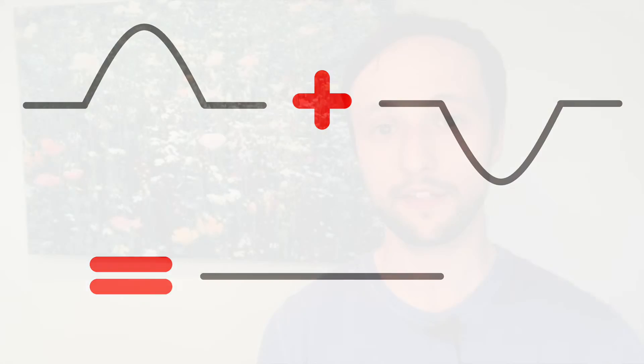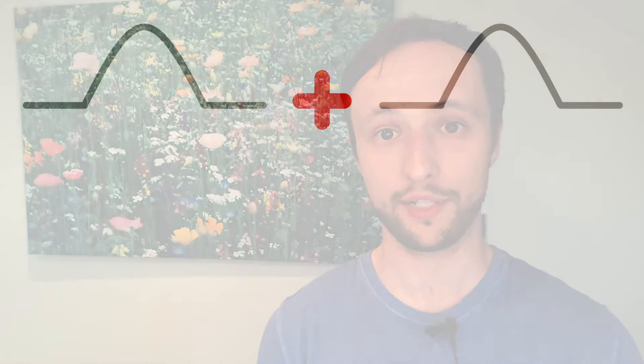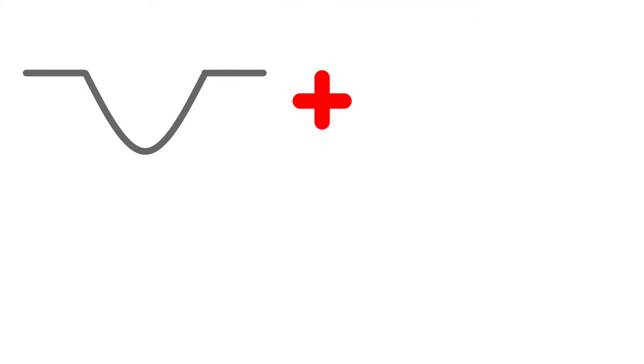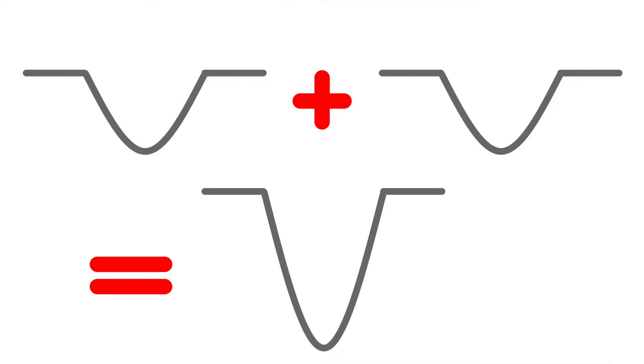Constructive interference is where the combination of two waves, or disturbances, adds up together to give you a larger amplitude wave, or disturbance — like this, or like this. Standing waves occur when two waves interfere destructively and constructively at just the right points along the length of the string.